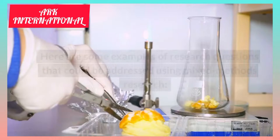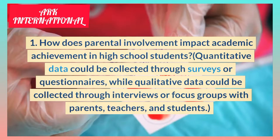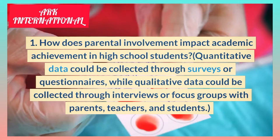Here are some examples of research questions that could be addressed using mixed methods research. First, how does parental involvement impact academic achievement in high school students? Quantitative data could be collected through surveys or questionnaires, while qualitative data could be collected through interviews or focus groups with parents, teachers, and students.